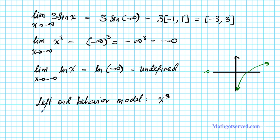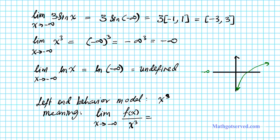The meaning is that the limit as x approaches negative infinity of the original function f of x divided by the left end behavior model x to the third equals 1, because their growth rates are identical.